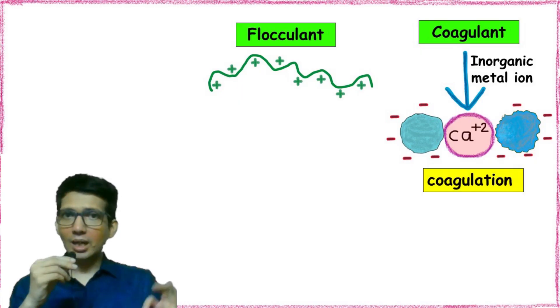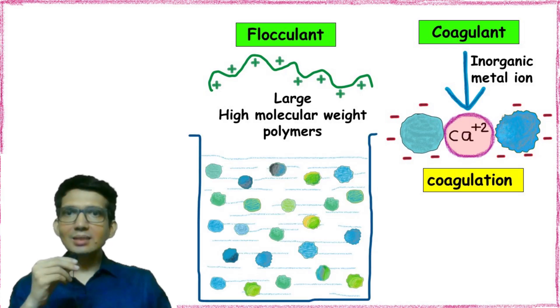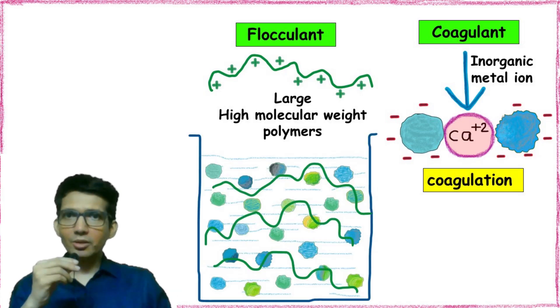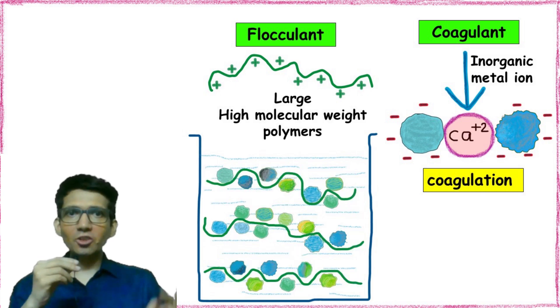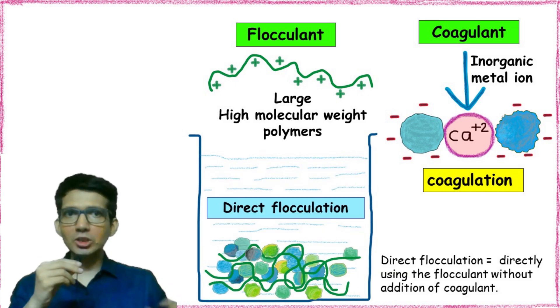The flocculants on the other hand are large high molecular weight polymers which can be chemically synthesized or they can be biological. The use of these high molecular weight polymers to cause aggregation of particles is termed as direct flocculation, i.e., we are directly using the flocculant without the addition of coagulant.